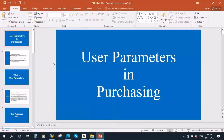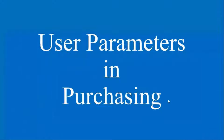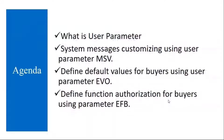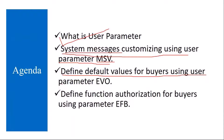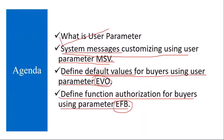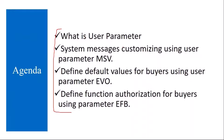This conference will now be recorded. We'll be starting our next topic: user parameters and purchasing. The topics we are going to cover include what is a user parameter, customizing system messages using user parameter MSV, defining default values for buyers using user parameter EEO, and defining function authorization for buyers using parameter EF2.